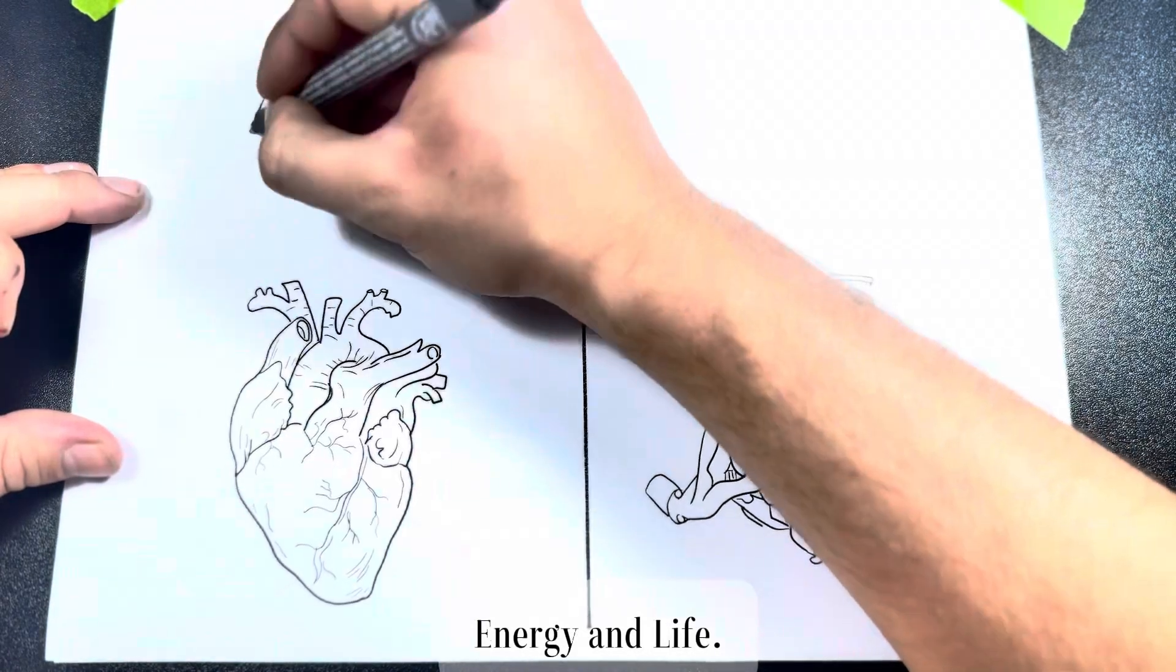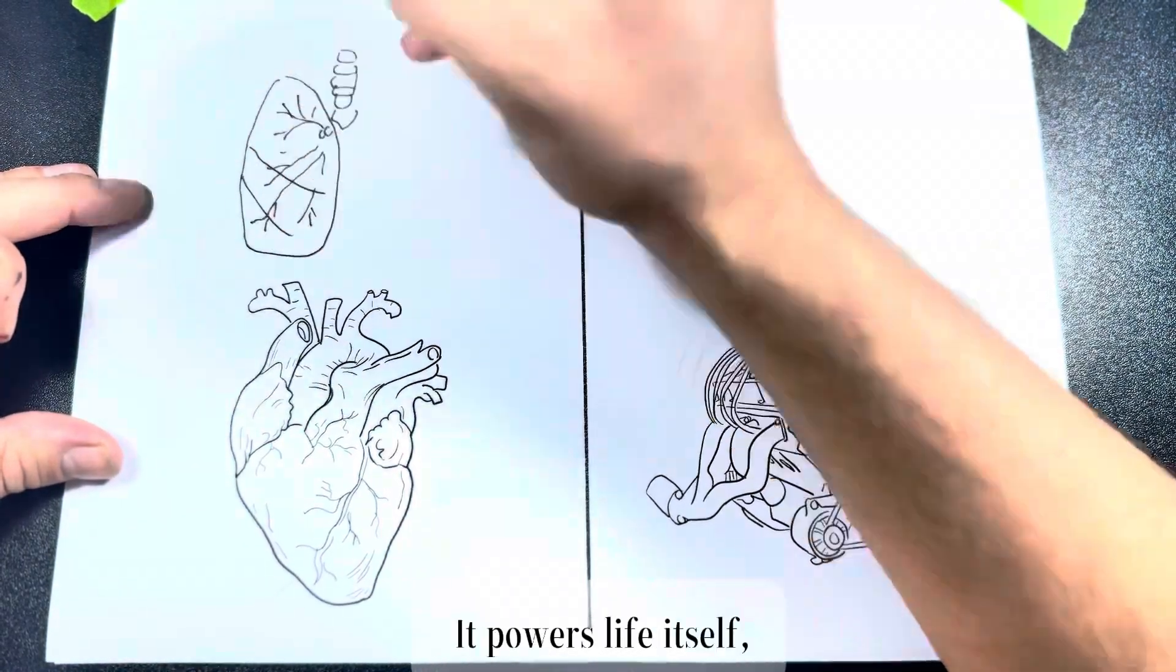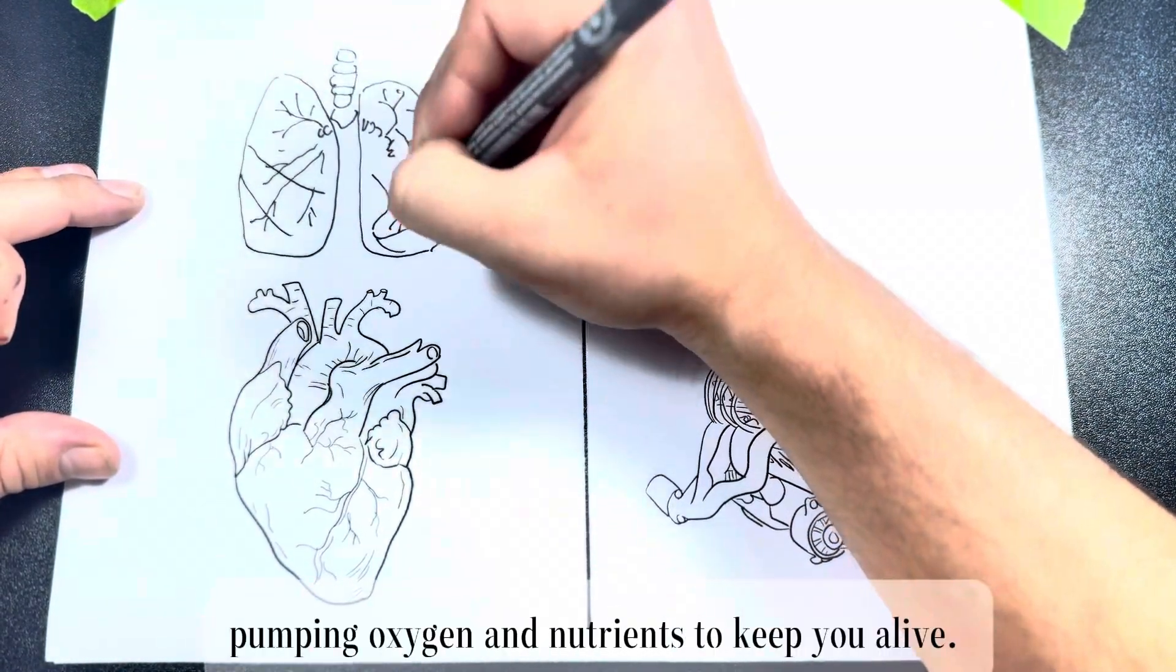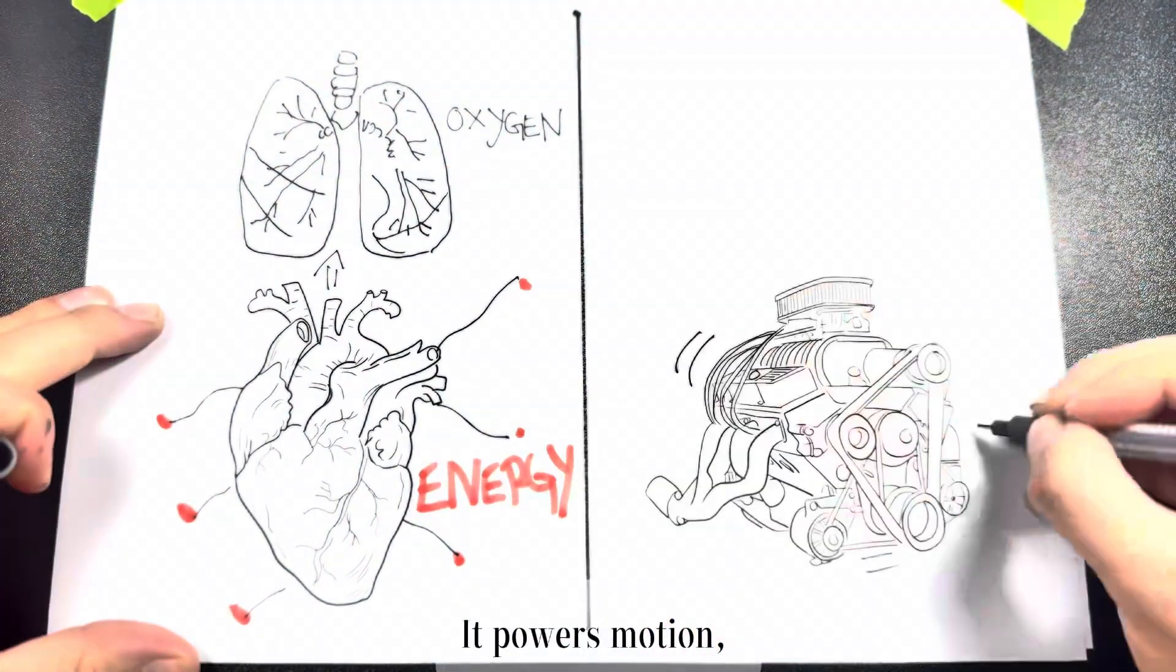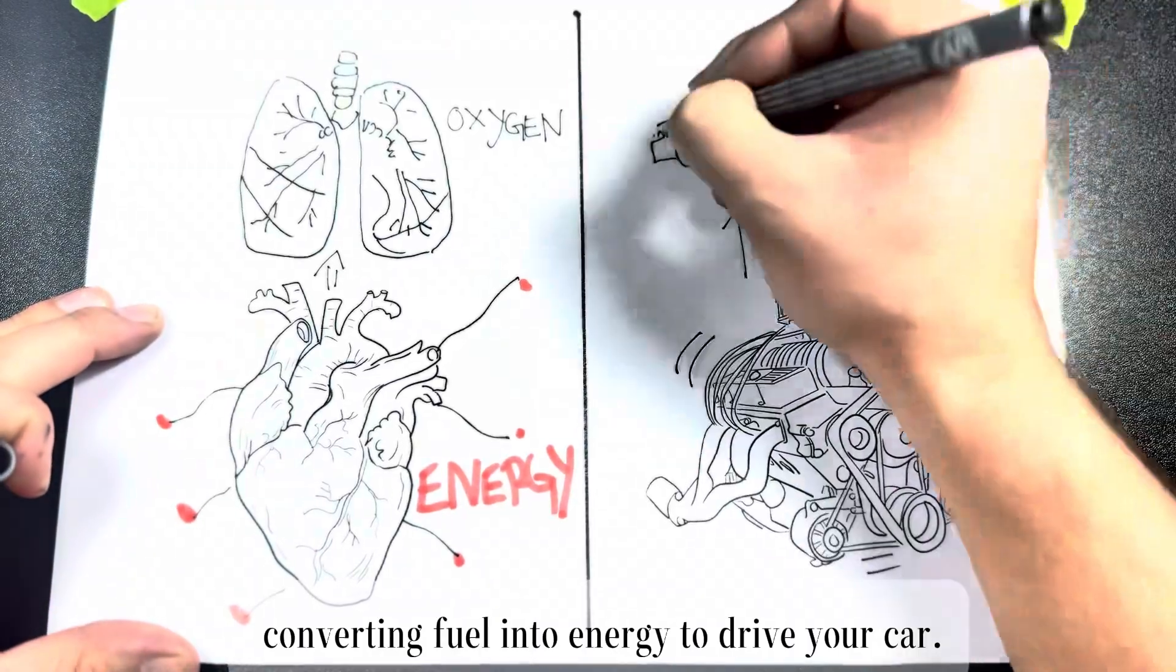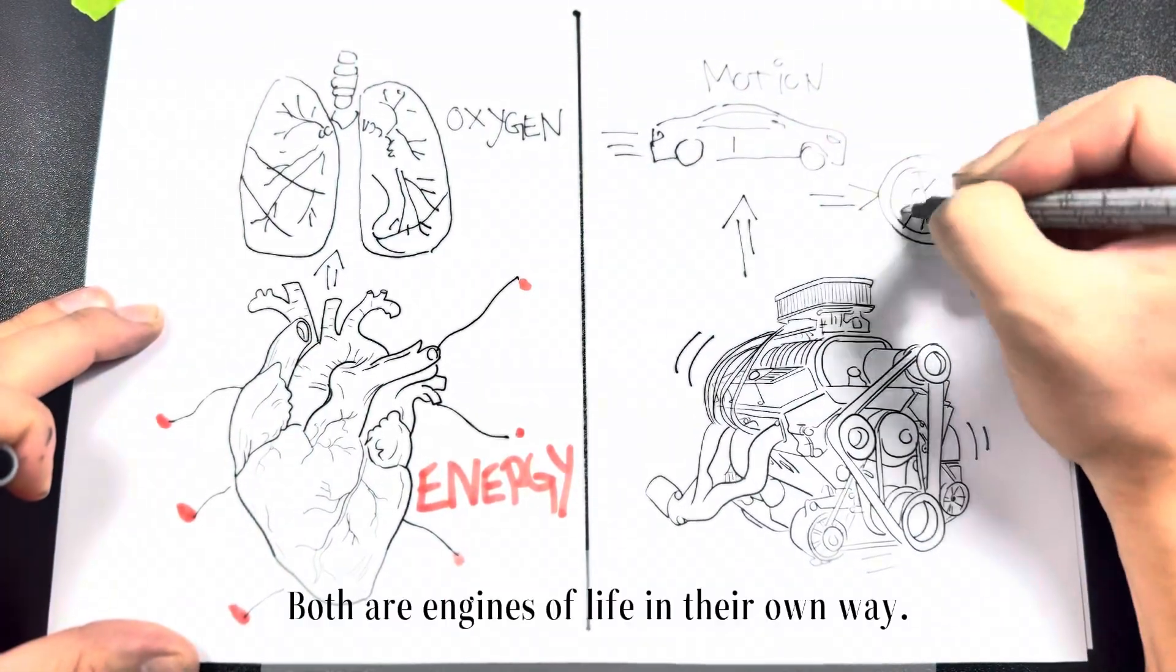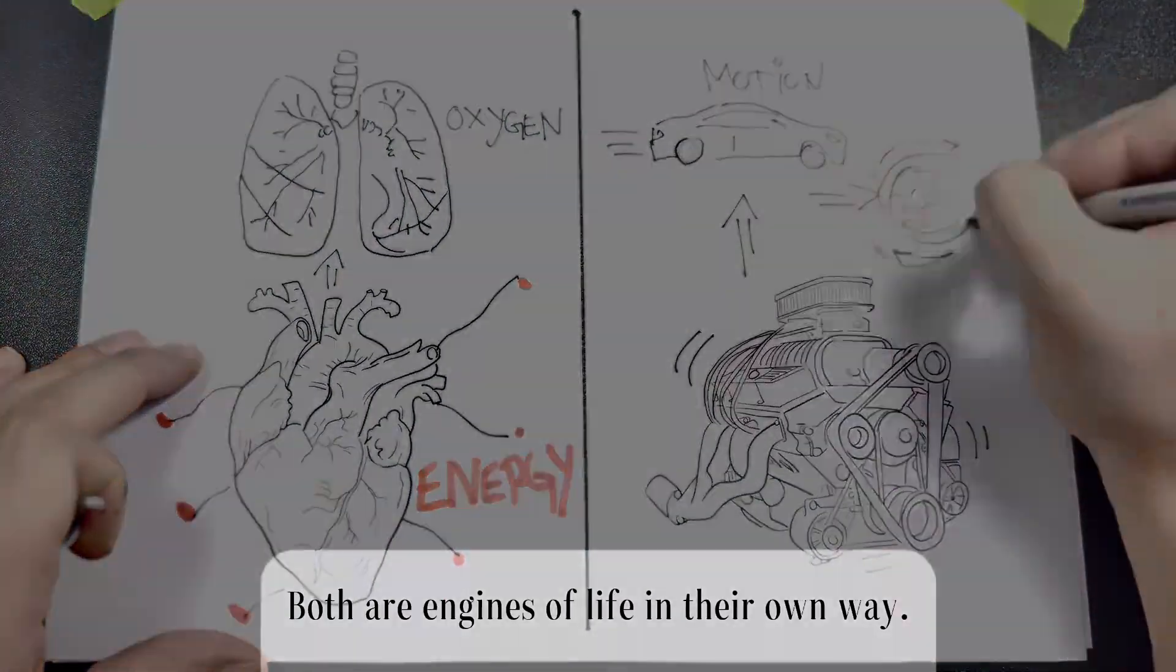Energy and life: The heart powers life itself, pumping oxygen and nutrients to keep you alive. The engine powers motion, converting fuel into energy to drive your car. Both are engines of life in their own way.